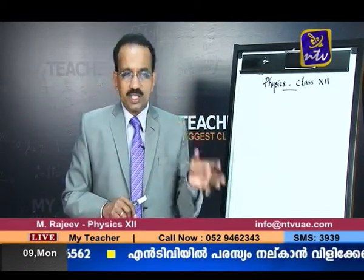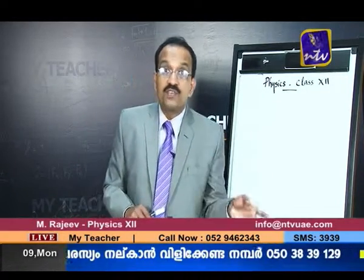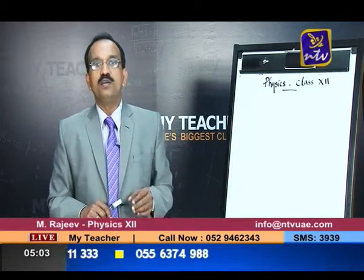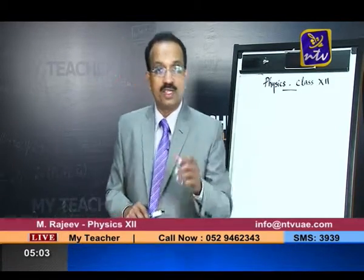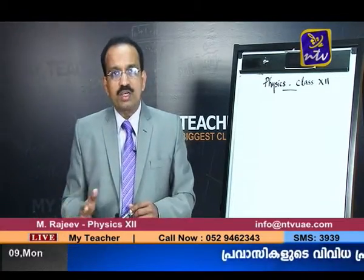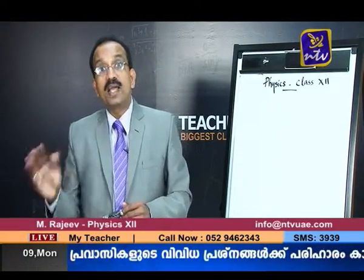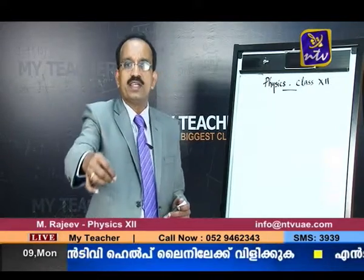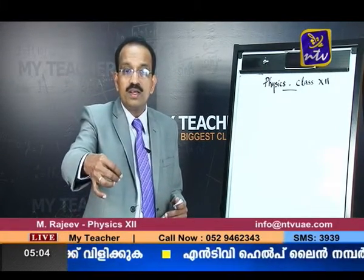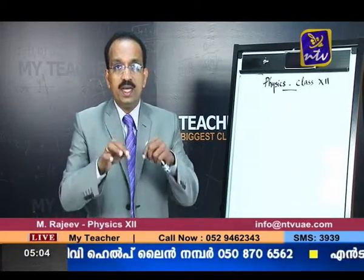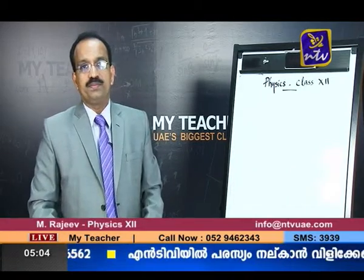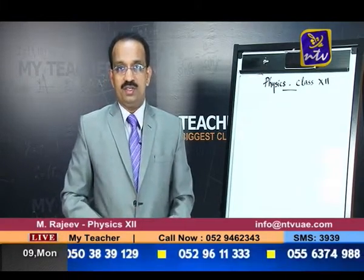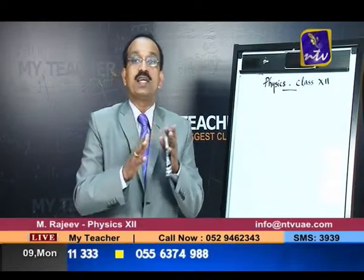In the first unit of physics you studied the movement of charge in an electric field — what happens when an electric field is applied and a charge particle enters it. This unit we are talking about the movement of a charge particle in a magnetic field. One basic difference: if you keep a charge particle inside a uniform electric field, straight away the charge particle will accelerate — it will gain kinetic energy.